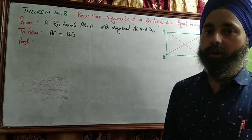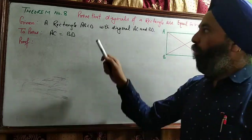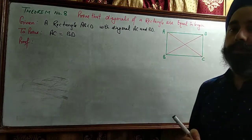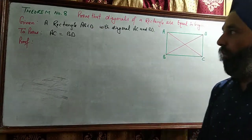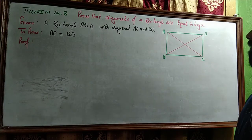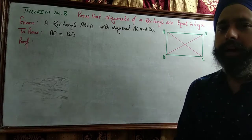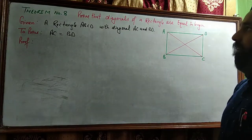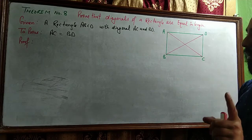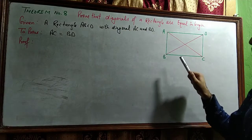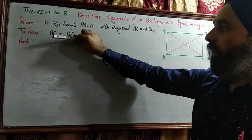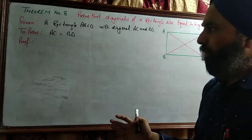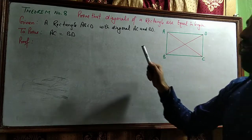In this video we will discuss two theorems from the quadrilateral chapter. The first theorem is based upon rectangle and the second one is from rhombus — properties of rhombus. So firstly I am going to discuss Theorem Number Eight: prove that diagonals of a rectangle are equal in length. We know diagonals of a rectangle are equal in length, but here we will prove the same concept. We are given a rectangle ABCD with diagonals AC and BD. We have to prove that diagonals are equal in length, that is AC is equal to BD.